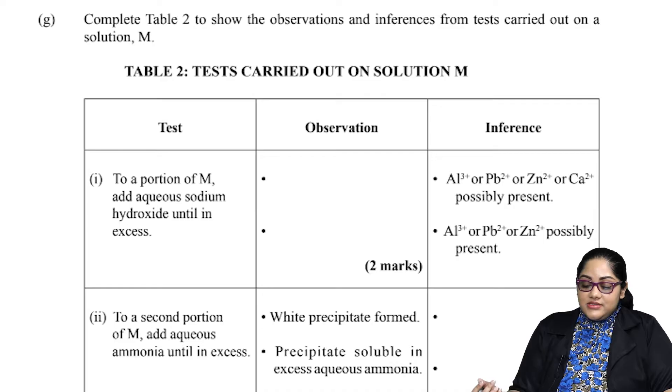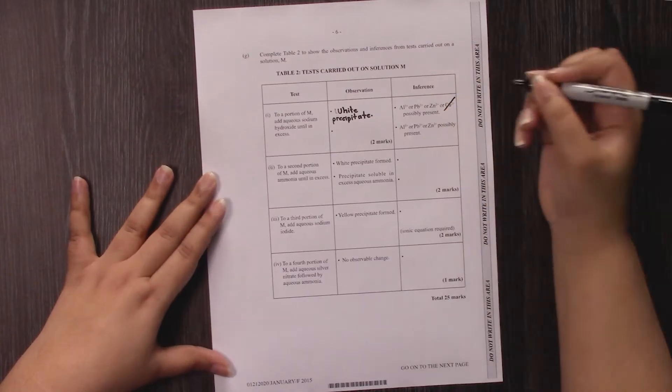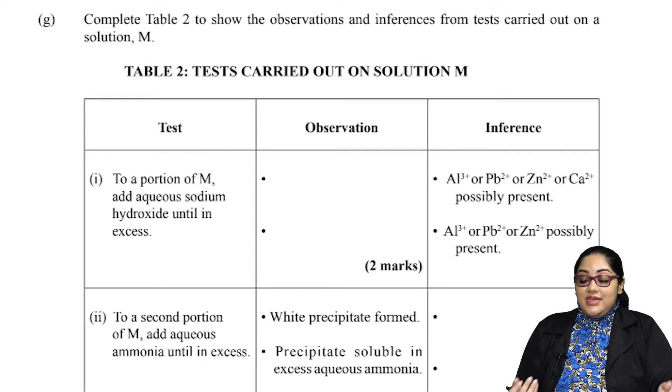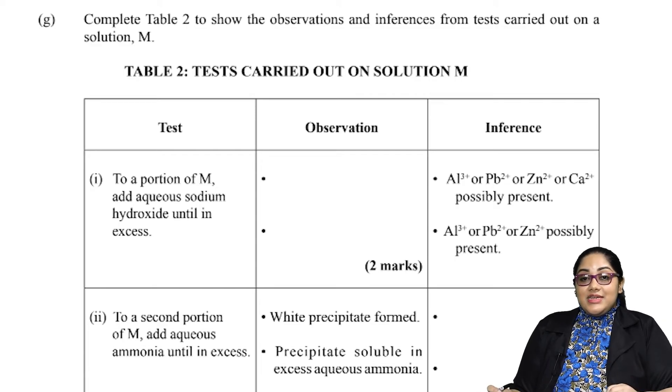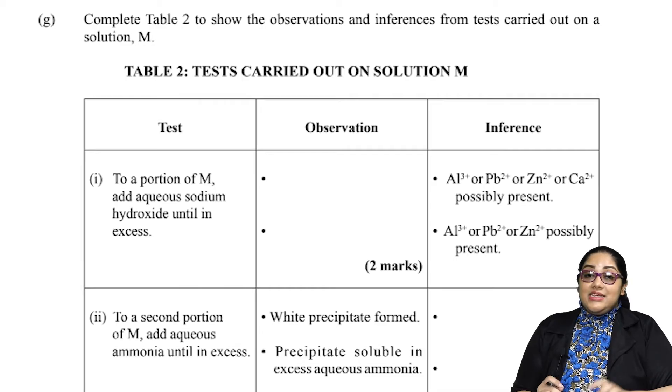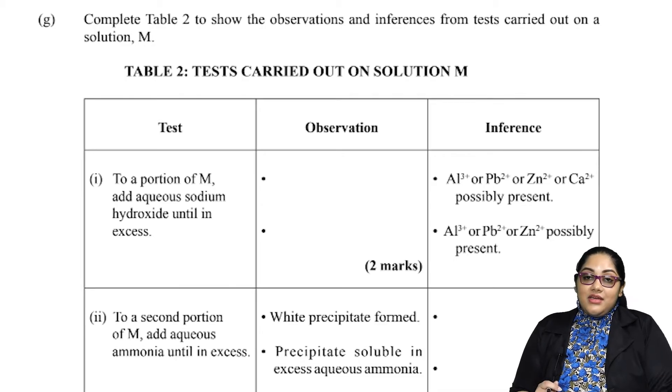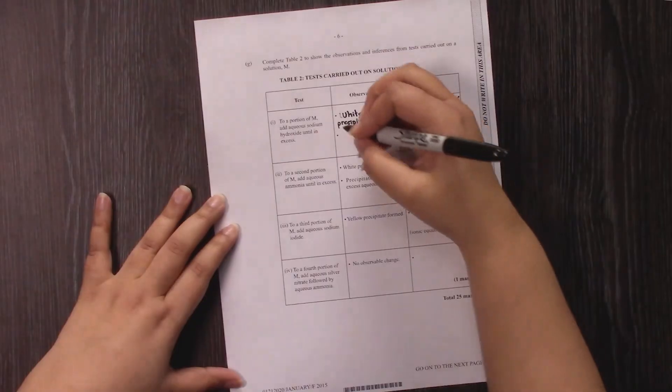The second inference is that we have aluminum, zinc, and lead present. So what happened is when we add the sodium hydroxide in excess, we crossed out the possibility of the iron being calcium. The reason for that is calcium, unlike the other three, is insoluble. So our second observation would have to be that our precipitate is going to dissolve.